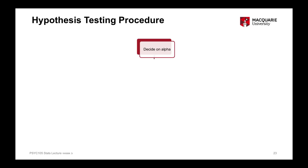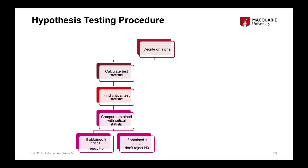The first thing we do in hypothesis testing is decide our critical alpha level — our cutoff for statistical significance. That's usually an alpha of 0.05, a 5% probability of making a type 1 error, but it sometimes differs from test to test and from research question to research question.